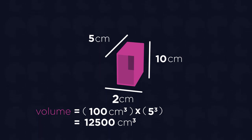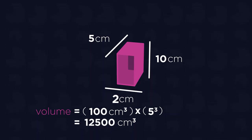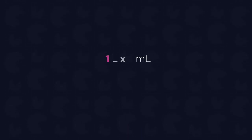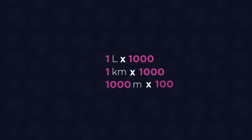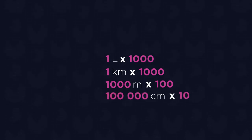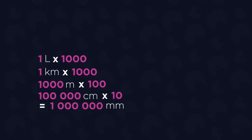Scale factors also apply to converting units. The metric system is a great example of this, and is likely something you will be familiar with. For example, 1 litre can be converted into millilitres by multiplying the volume by a scale factor of 1000. Another example is converting kilometres to millimetres. Say we have a distance that is 1 kilometre long. We would need to multiply 1 by 1000, as there are 1000 metres in a kilometre; multiply that by 100, as there are 100 centimetres in a metre; and finally by 10, as there are 10 millimetres in a centimetre. That gives us a grand total of 1 million millimetres.